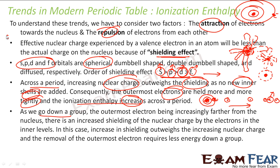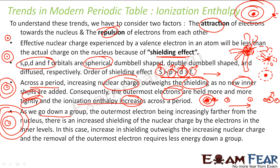As we go down the group, the size increases. For example, going down the group, plucking an electron from the top atom is difficult, plucking from the next is a little easy, and further down it becomes easier and easier. So as you go down the group, the ionization energy decreases because of the shielding effect by all the inner orbitals.